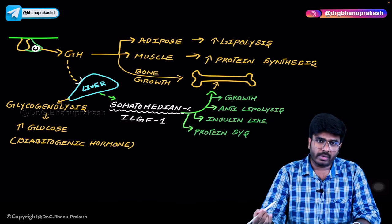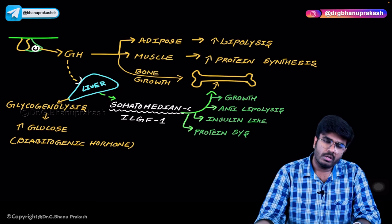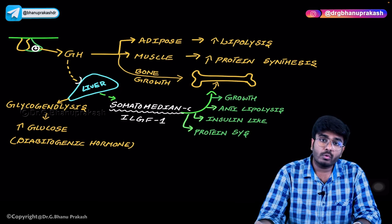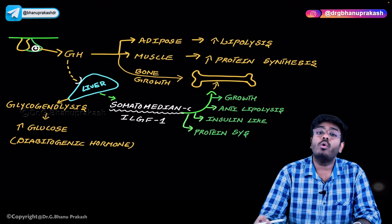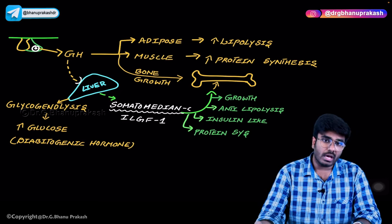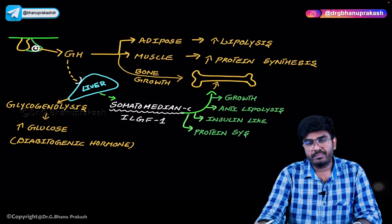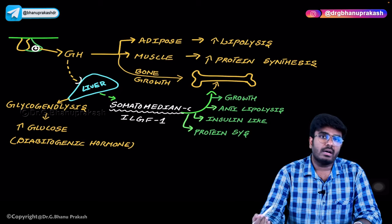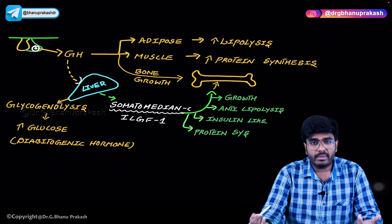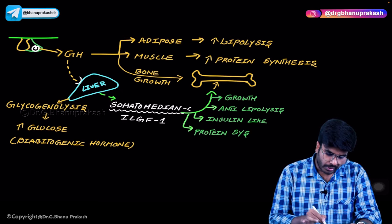For example, if there is a tumor in the pituitary gland producing excess growth hormone, that growth hormone will act on the liver causing a large increase in blood glucose levels. This excess glucose can cause diabetes mellitus. Therefore, growth hormone is called a diabetogenic hormone — it increases blood glucose levels and makes a person susceptible to diabetes.